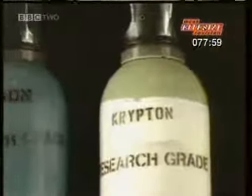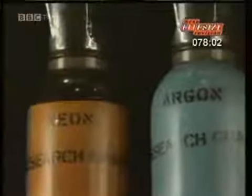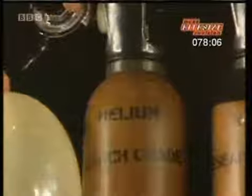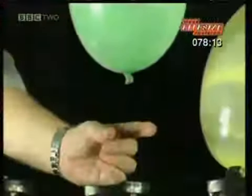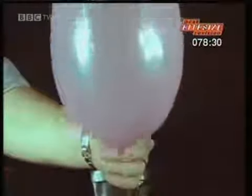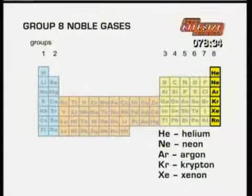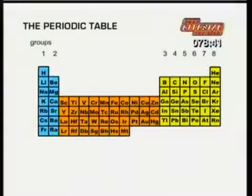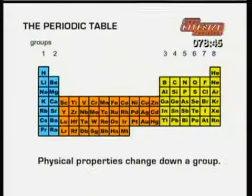Take the noble gases — there's not much chemistry to see, but there are changes in their physical properties, for instance in their density. A balloon filled with helium rises quickly. A neon-filled balloon rises slowly. An argon balloon falls slowly. Krypton is denser still, and xenon is the densest of all. The density of each noble gas increases as you move down the group. Quite often, properties like boiling points and melting points change progressively as you move down a group of elements.